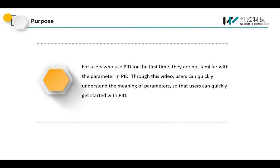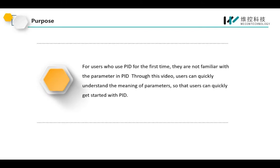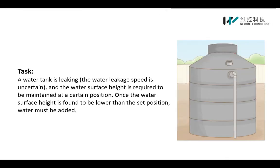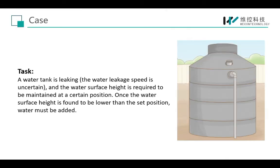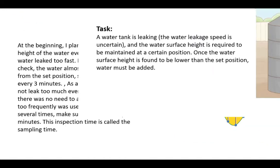So that users can quickly get started with PID, here is a task: a water tank is leaking, the water leakage speed is uncertain, and the water surface height is required to be maintained at a certain position. Once the water surface height is found to be lower than the set position, water must be added.